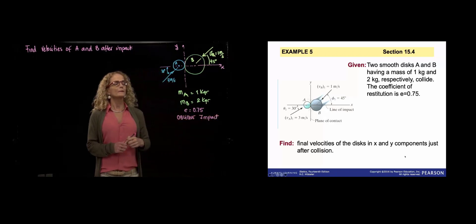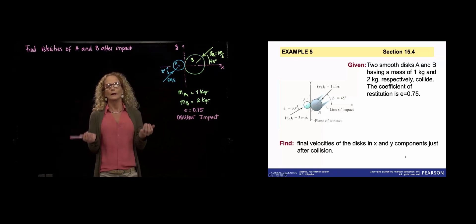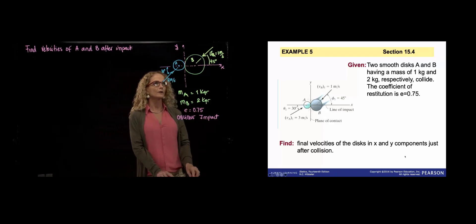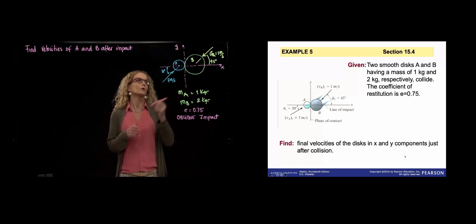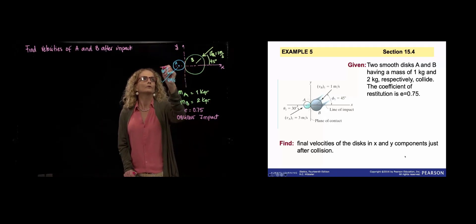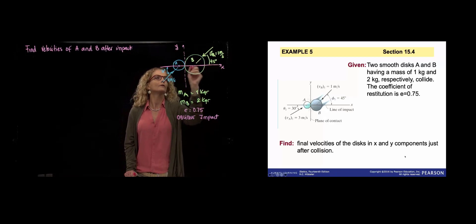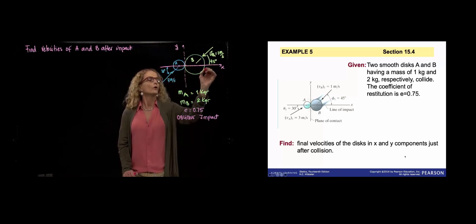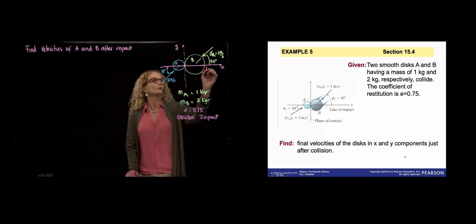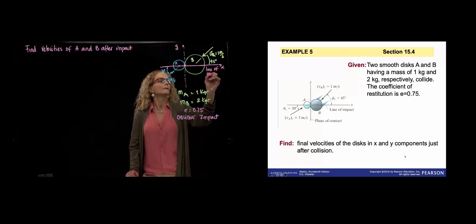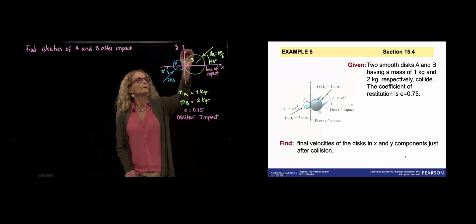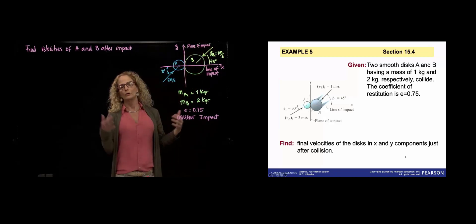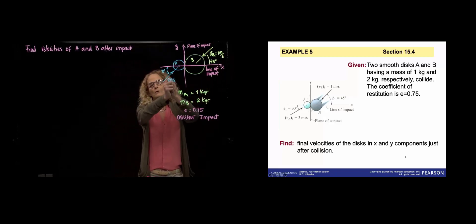It's oblique because the initial velocities are not aligned with the line of impact. What is the line of impact in this case? It is the line that is perpendicular to both surfaces. This is the line of impact because it's perpendicular to the two surfaces, or perpendicular to the plane of impact. This is the line of impact, here in X, and the plane of impact is in Y. The collision occurs along the line of impact.